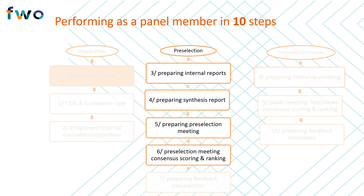During step 6, the pre-selection meeting itself, the panel has the opportunity to determine a panel score for each application, taking the rapporteur score and individual reviews into account. On the basis of the panel score, a new ranking reflecting the relative quality of proposals is made, and the panel decides which candidates will be retained for interview. After step 6, the FWO asks the rapporteurs to write feedback reports for candidates rejected at this stage. These reports, based on the rapporteur's original synthesis report, should reflect the panel's consensus decision and align with the final scores given by the panel.